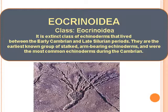Eocrinoidia, class Eocrinoidia, is an extinct class of echinoderms that lived between the Early Cambrian and Late Silurian periods. They are the earliest known groups of stalked arm-bearing echinoderms and were the most common echinoderms during the Cambrian.